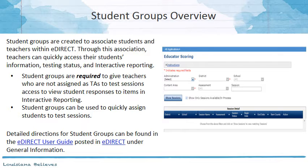A brief overview of student groups. Student groups are created to associate students and teachers together within eDirect. Through this association, teachers can quickly access their students' information, testing status, and interactive reporting results. Student groups are required for any teacher who is not assigned as a TA to a test session. So those teachers, if they need access to the student responses within interactive reporting, you're going to have to have a student group associated with that TA.